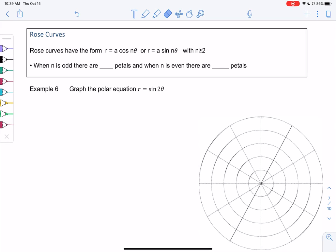Section 8.2, example 6. We're going to start with this thing called rose curves. Rose curves will have the form where we have r equals a cosine or sine of n theta, where n is bigger than or equal to 2. Essentially our angle has a coefficient. It makes rose curves.